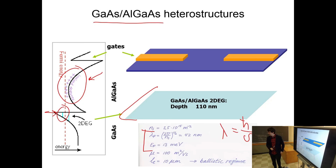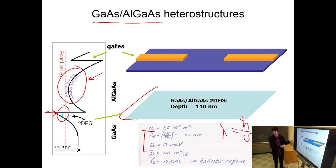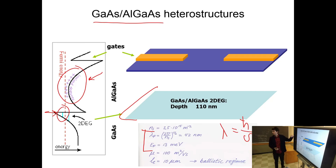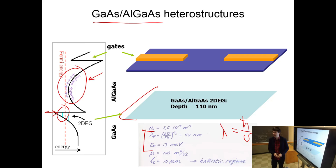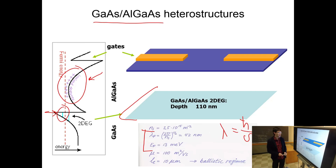These structures are also very ballistic. The ballistic regime means there is a very long mean free path, and you can achieve this by carefully engineering the semiconductors — for example, by putting the dopants a few nanometers away from the interface rather than at the kink itself. For very high mobility structures you can have mean free paths of tens of microns, which is millions of lattice sites flying without scattering.